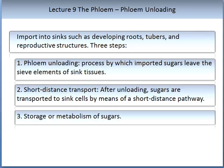Now let us look at phloem unloading. This is the process where assimilates leave the phloem, important into sinks such as developing roots, tubers, and reproductive structures. Again, there are three steps. The first step is phloem unloading — the process by which imported sugars leave the sieve elements of sink tissues. This is followed by short distance transport, where sugars are transported to the sink cells. The final stage is storage or metabolism of the sugars, depending on their function at this point.